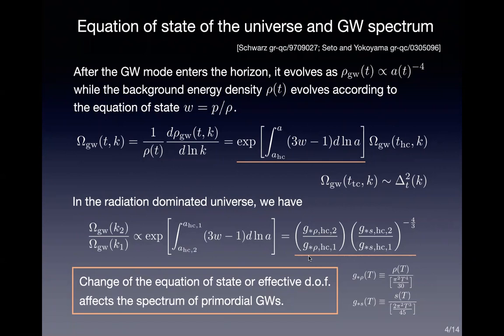In the radiation-dominated universe, this factor is proportional to the ratio of the g-star function, which describes the effective degrees of freedom of radiation and is given by a specific formula. So if there is a change in the equation of state or a change in the effective degrees of freedom in our universe, we expect this to affect the spectrum of primordial gravitational waves.